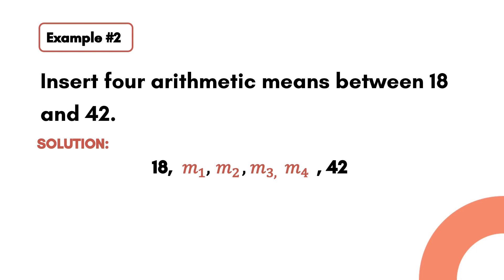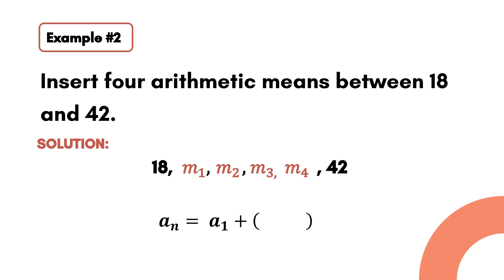We let the 4 arithmetic means be m₁, m₂, m₃, and m₄. You will notice that the 4 arithmetic means inserted between 18 and 48 are actually the terms of our sequence. So, to solve for these arithmetic means, we will use the formula for finding the nth term of an arithmetic sequence.